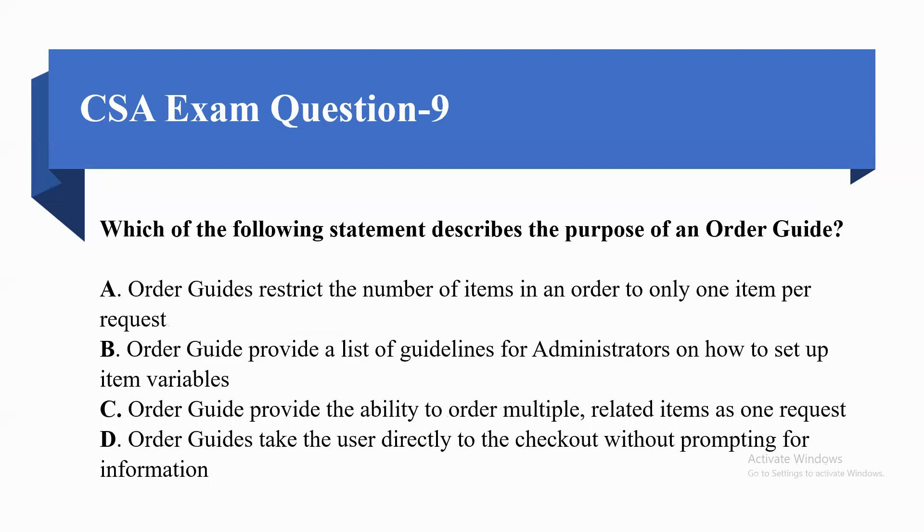Next question: which of the following statements describes the purpose of an order guide? Option A. Order guide restricts the number of items in an order to only one item per request. Option B. Order guide provides a list of guidelines for administration on how to set up item variables. Option C. Order guide provides ability to order multiple related items as one request.